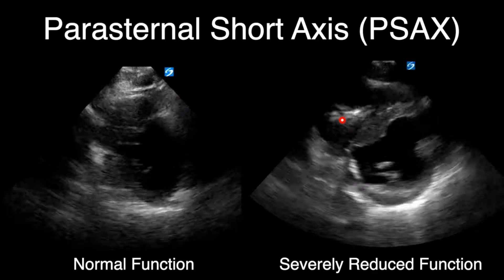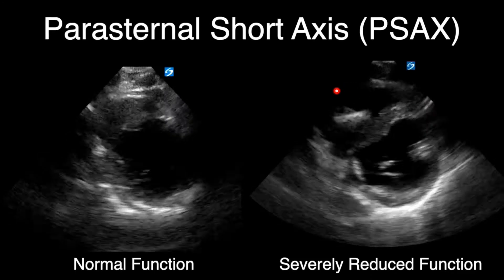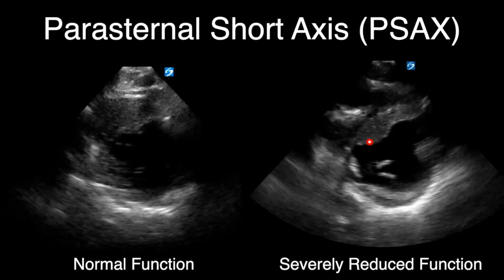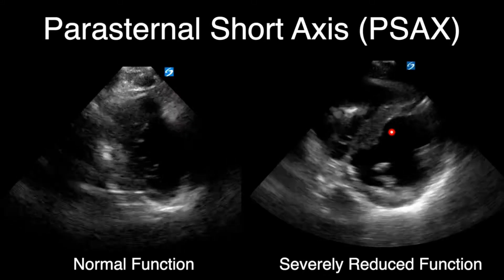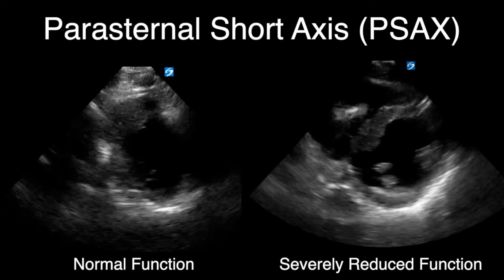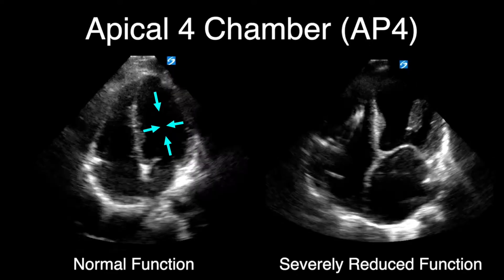In the apical four-chamber view we look in two directions: shortening from the apex down toward the mitral valve, and lateral shortening from the septal wall to the outer wall. The left ventricle actually has three muscle layers that collapse in longitudinal, axial, and diagonal planes, but on ultrasound we appreciate just these two primary movements.